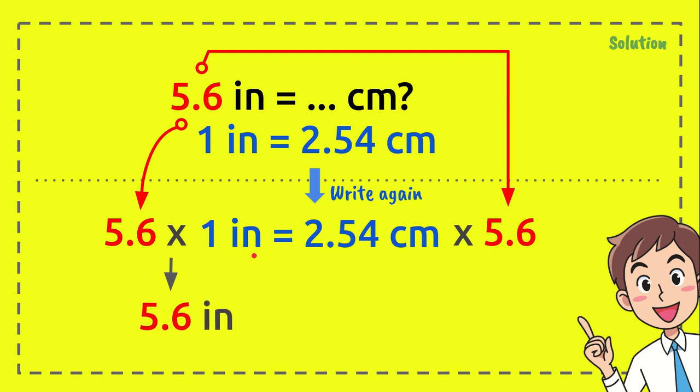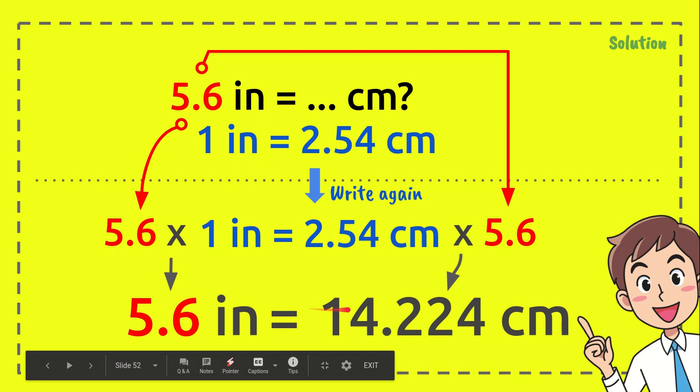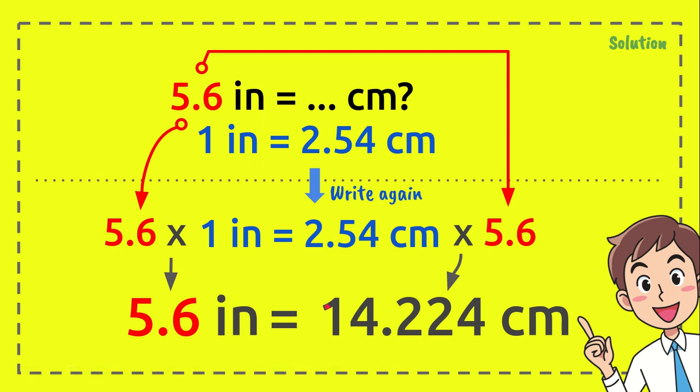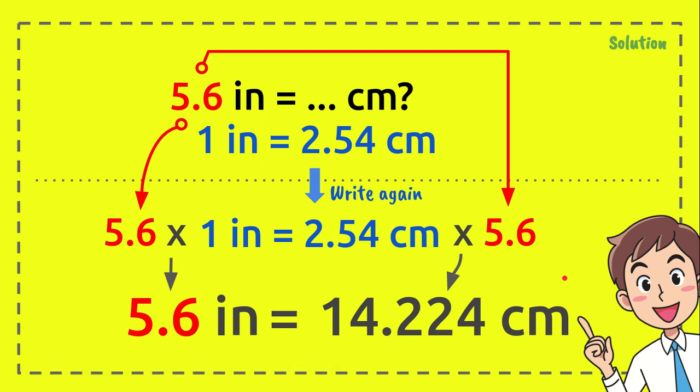5.6 times 1 inch equals 5.6, and 2.54 centimeters times 5.6 equals 14.224 centimeters. So 5.6 inches equals 14.224 centimeters, and that's the answer. I hope you enjoyed this video and I hope it is useful for you.